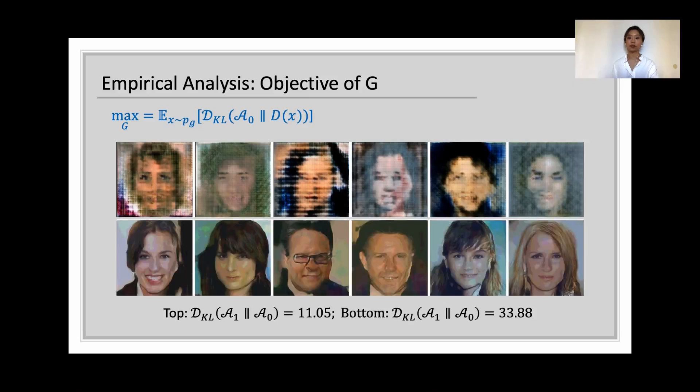And by increasing the divergence between two anchors, the samples now look much better as we can see facial features clearly. However, due to the fact that D is not always at its optimal as assumed by theory, training with this objective is not ideal as expected.